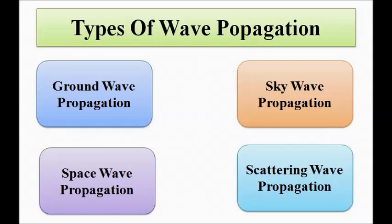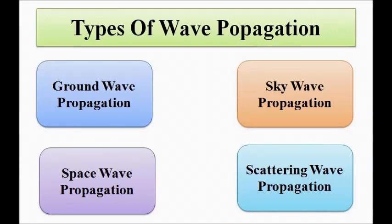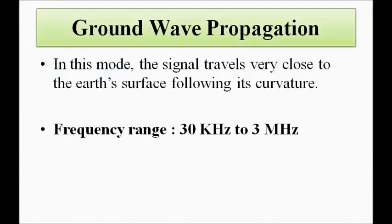There are four types of signal or wave propagation techniques: ground wave propagation, sky wave propagation, space wave propagation, and scattering wave propagation. In ground wave propagation, the signal travels very close to the surface of the earth.